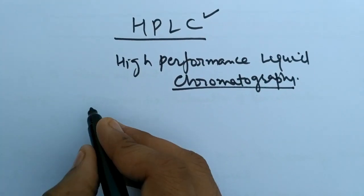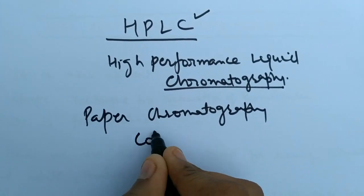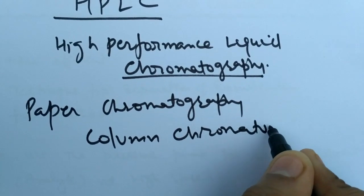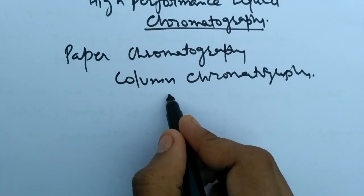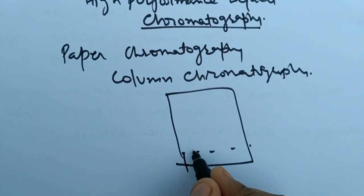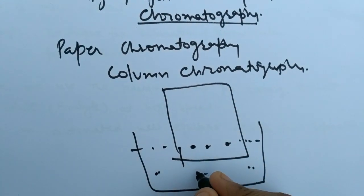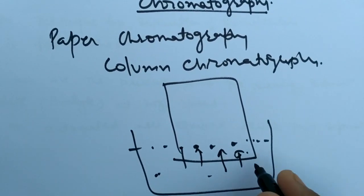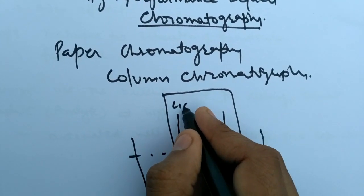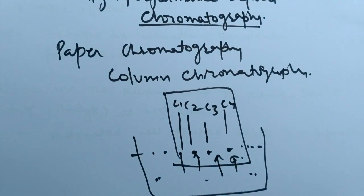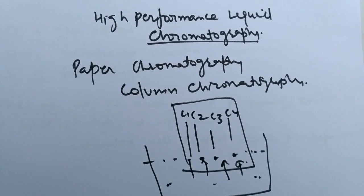The basic idea behind HPLC is paper chromatography. It is a type of column chromatography. In paper chromatography, we apply the sample on the bottom of filter paper and dip it in the solvent, which is the mobile phase. The mobile phase runs in the capillaries of the filter paper and the sample runs along with it. Various colors C1, C2, C3, C4 are seen, and the number of colors appearing after separation determines the number of molecules in the mixture.